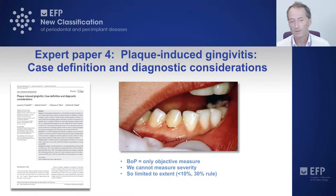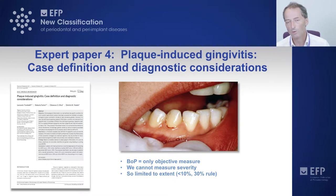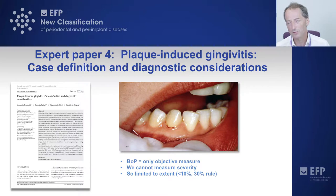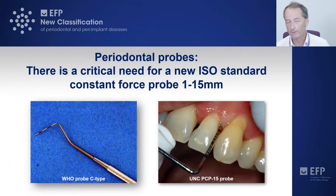Here we have some very delayed bleeding following light probing. It's not a full line of bleeding at the gingival margin. The patient is otherwise healthy — they don't have attachment loss or bone loss — so we regarded this as a site of gingival inflammation in a case that was otherwise clinically healthy.